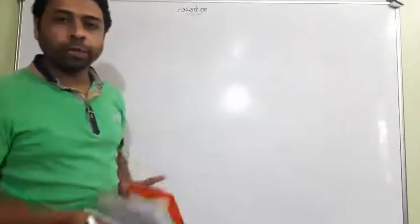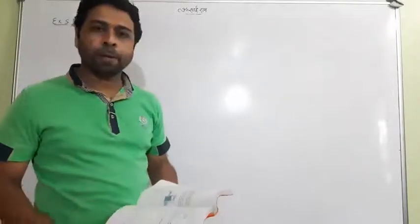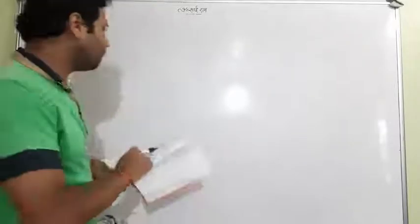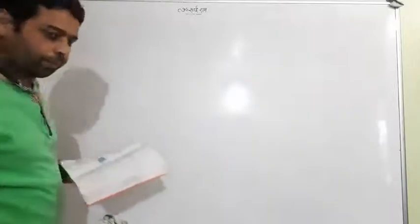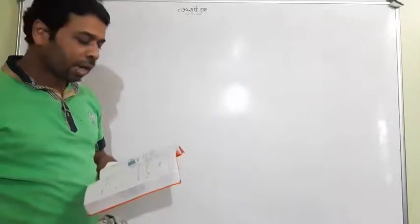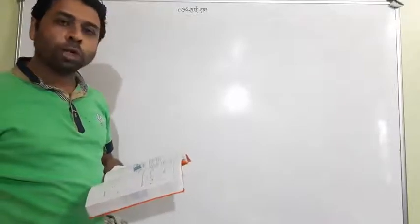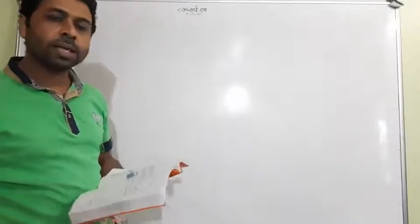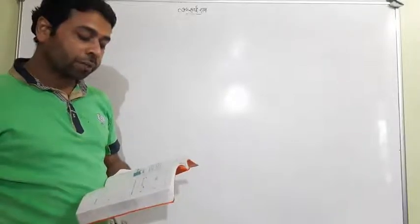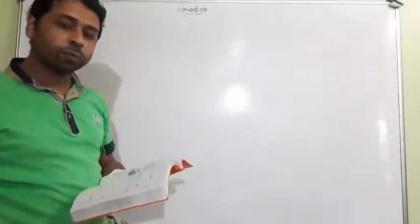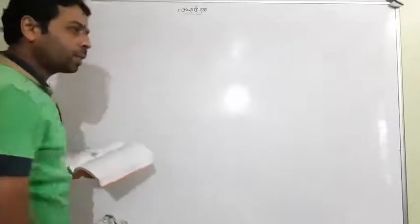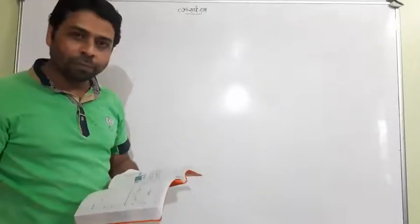Good morning students. We will see more examples from the same chapter. Earlier we completed up to Example 4, and today we will start Example 5. The question says: the shadow of a tower standing on level ground is found to be 40 meters longer when the Sun's altitude is 30 degrees than when it was 60 degrees.